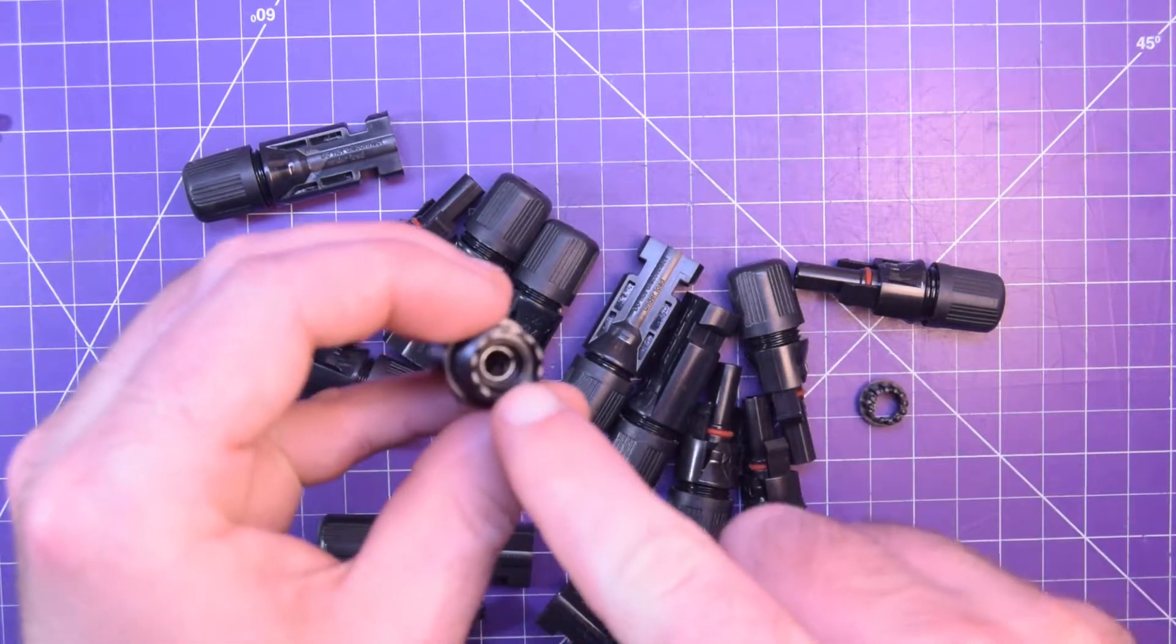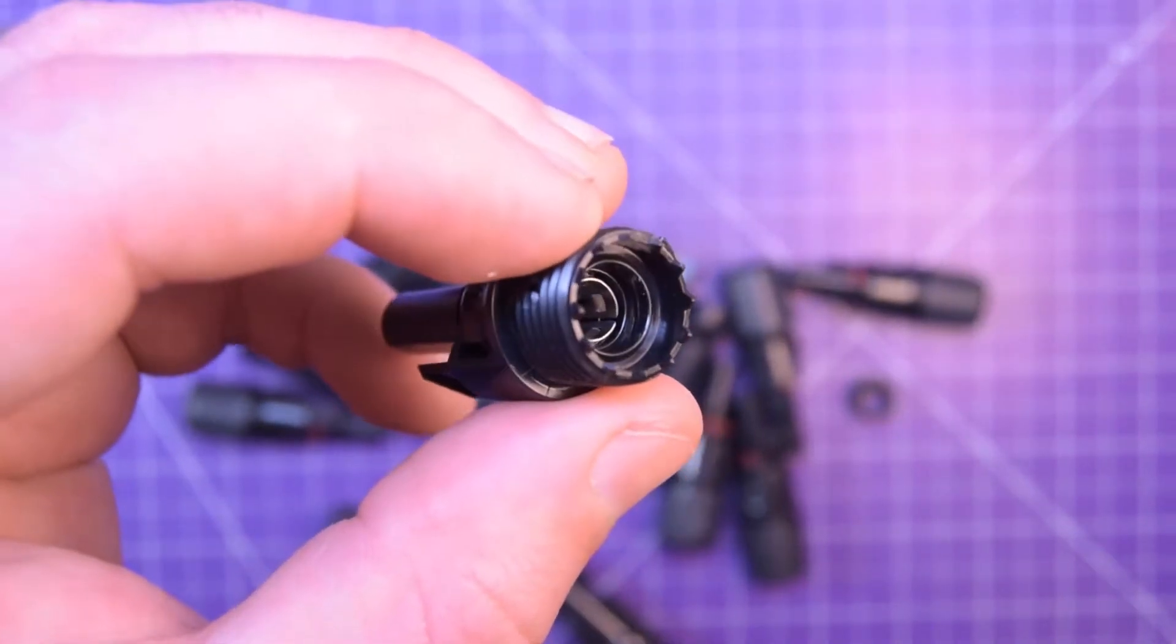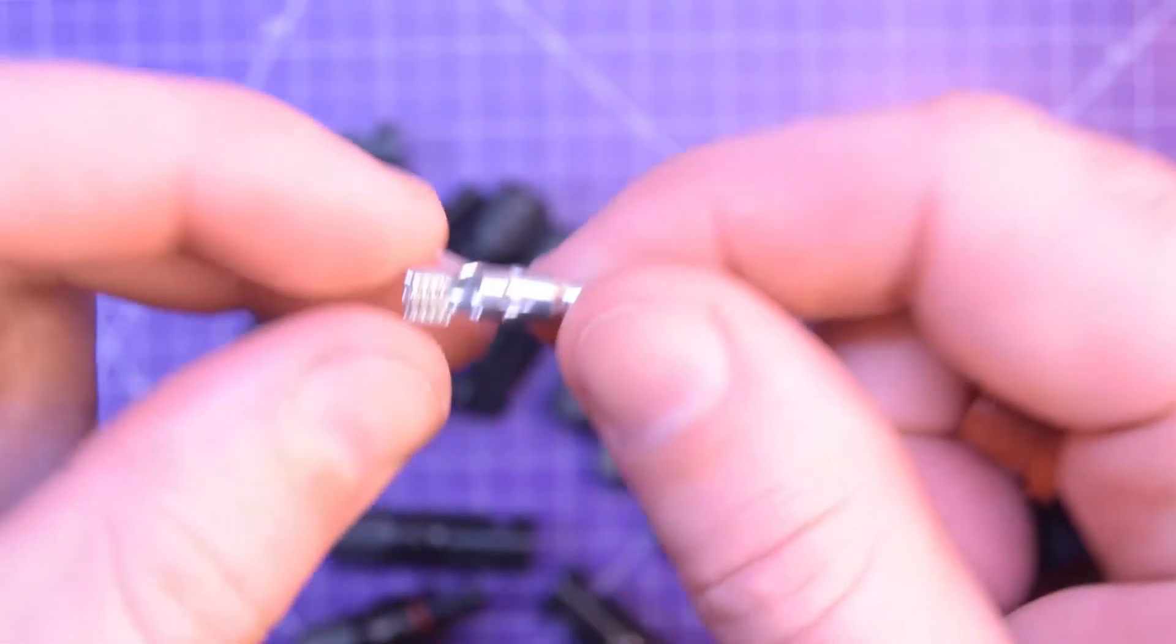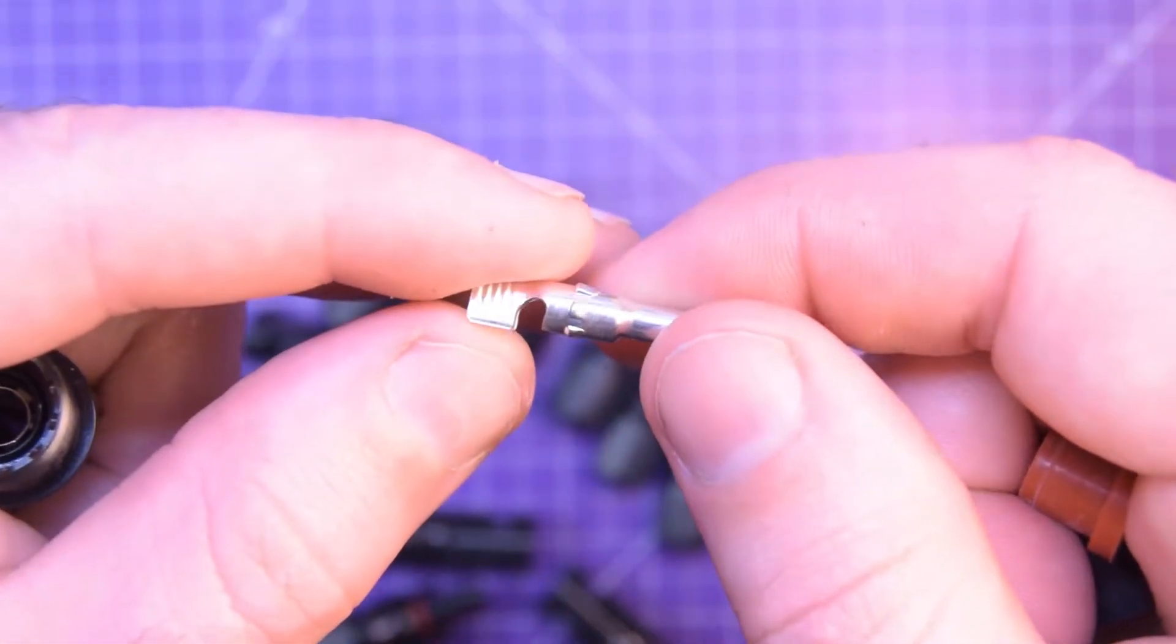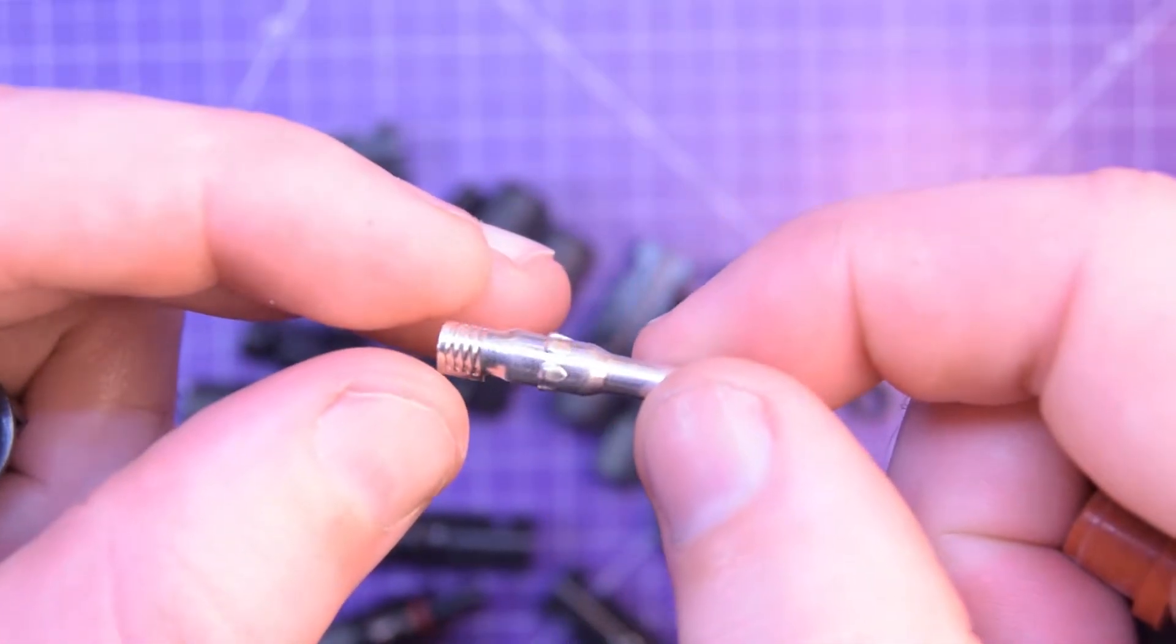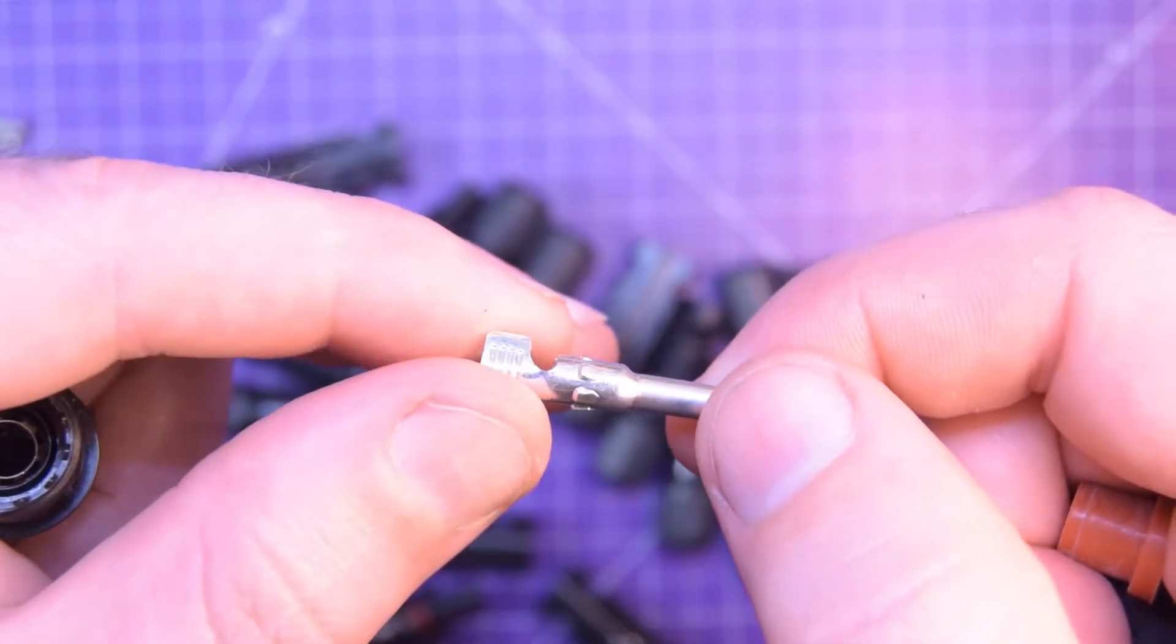There's even a little metal collar in there with little detents on the side that accepts little detents on this metal work here. So again, it's really made to be crimped and assembled by the end user, which is pretty neat.